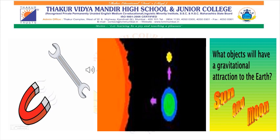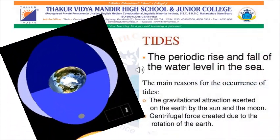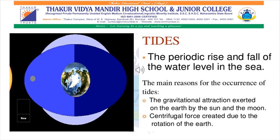Now, besides the earth, the sun and the moon also have their own gravitational power. The gravitational pull of the moon and the sun makes the water in the oceans bulge, causing a continuous change between water levels called tides. So, tides are the rising of the earth's ocean surface caused by the gravitational forces of the moon and the sun acting on the oceans. It is the periodic rise and fall of the water level in the sea. The main reasons for the occurrence of tides are the gravitational attraction exerted on the earth by the sun and the moon, and the centrifugal force created due to the rotation of the earth.